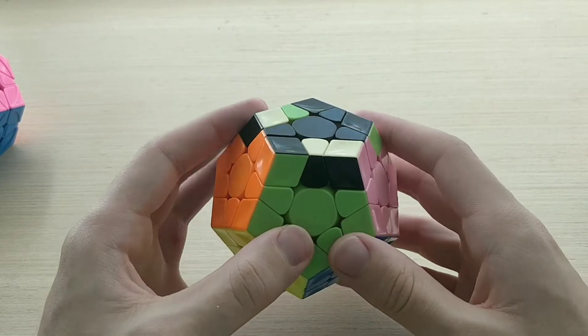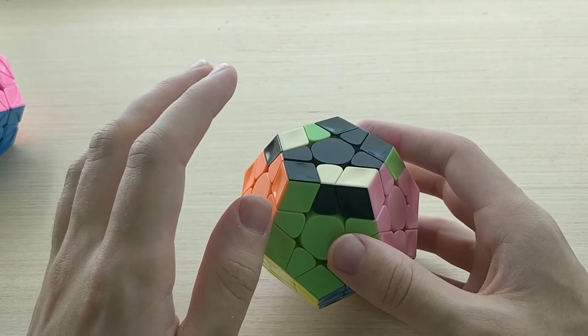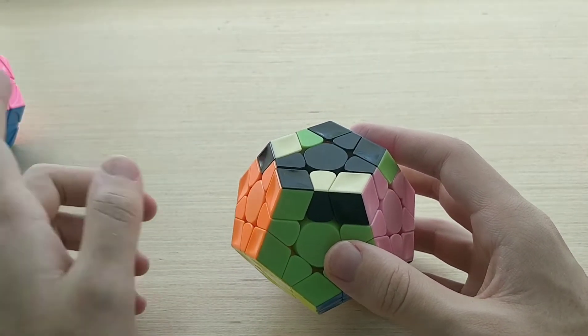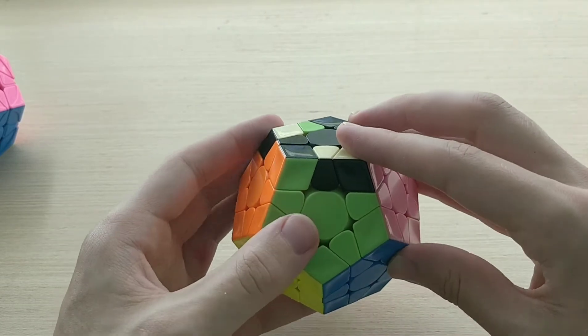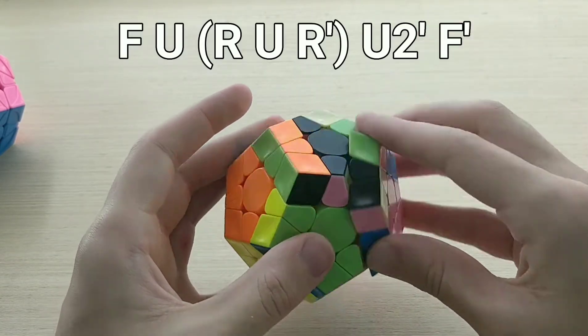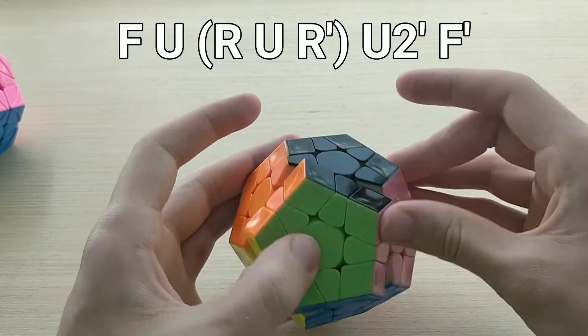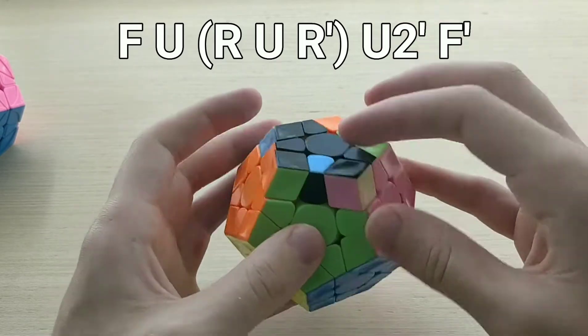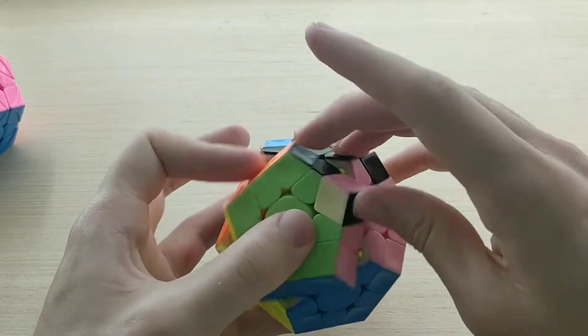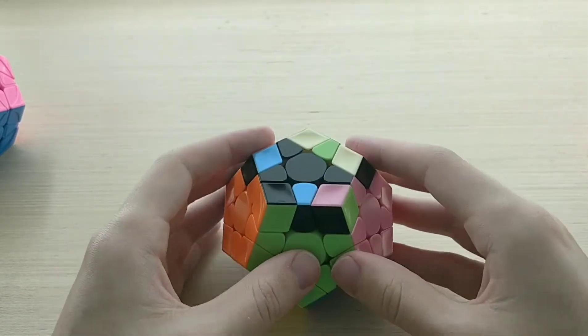And finally for 9b minus, it's just the mirrored and rotated version of that previous algorithm, which looks like this. f, drag u, r u r', u2', f' like that.